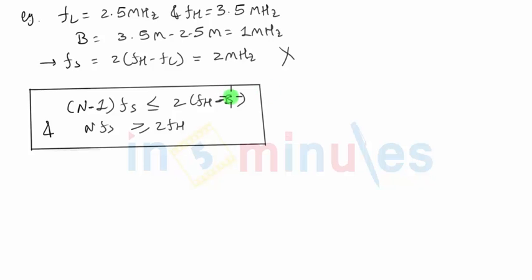B is the bandwidth of the bandpass signal, which is fh minus fl. And N in this case is nothing but an integer. So n will be an integer.